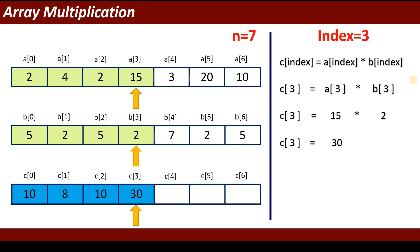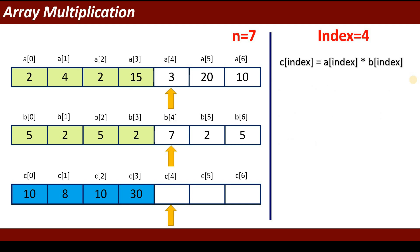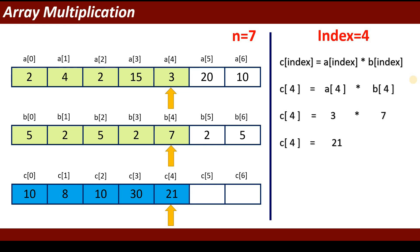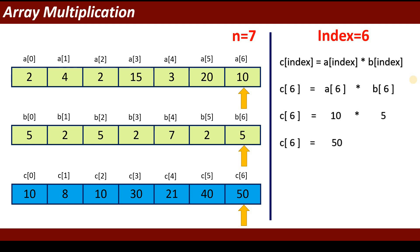When index is 3: 15 multiplied by 2 gives 30, stored into c[3]. When index is 4: 7 multiplied by 3 gives 21, stored into c[4]. When index is 5: a[5] is 20 and b[5] is 2, so 20 multiplied by 2 gives 40. Then 10 multiplied by 5 gives 50 for index 6.